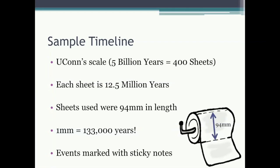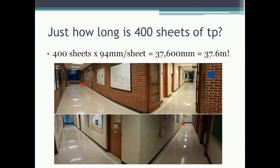Now we're going to show a sample timeline created using Yukon's set of instructions. Remember, 5 billion years on this scale is equal to 400 sheets of toilet paper, working out to 12.5 million years per sheet. The particular brand of toilet paper used had sheets that were 94 millimeters in length, meaning one millimeter on this scale was 133,000 years. Events were marked simply with sticky notes.